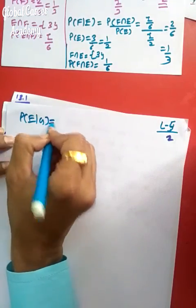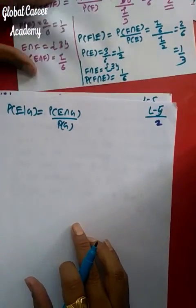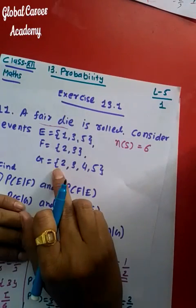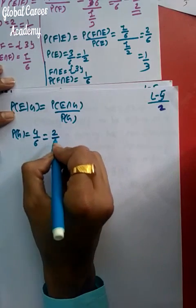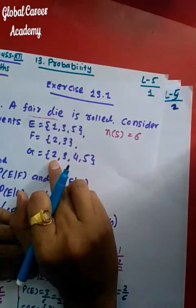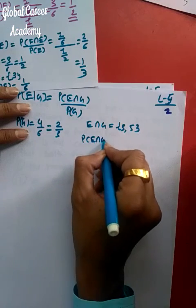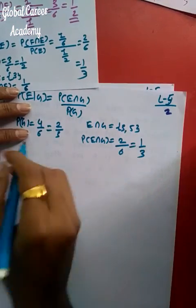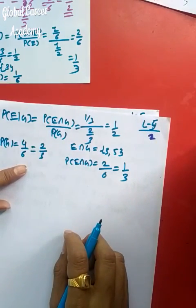Similarly, let us find P(E|G). P(E|G) = P(E∩G) ÷ P(G). P(G) has 4 points out of 6, so P(G) = 4/6 = 2/3. For E∩G, 3 and 5 are common, so there are 2 points out of 6, giving P(E∩G) = 2/6 = 1/3. Therefore P(E|G) = (1/3) ÷ (2/3) = 1/2.